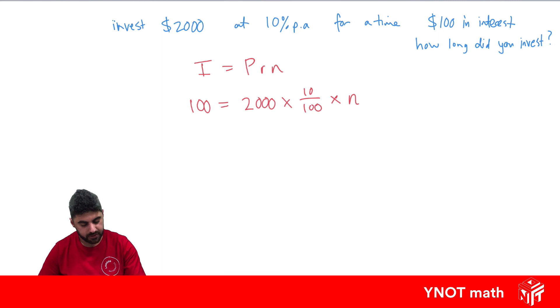So we do a little bit of calculation here. So we can do 100 equals 2,000 times, well we can simplify 10 on 100 to 1 on 10, times n. So 100 equals, we can now do 2,000 divided by 10 which is 200 times n. And divide both sides by 200.